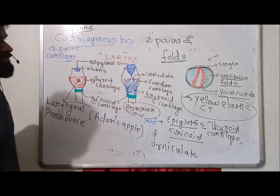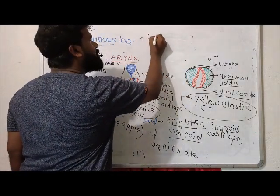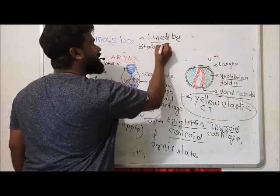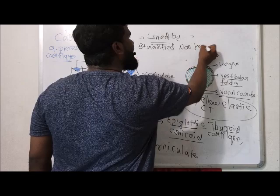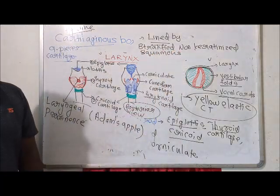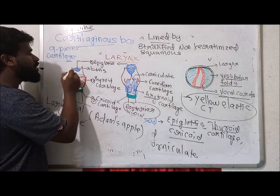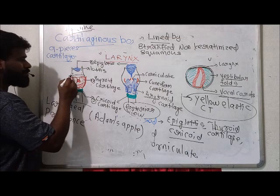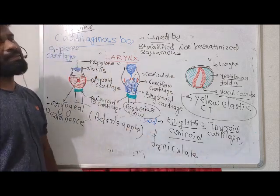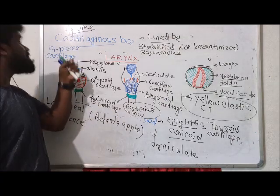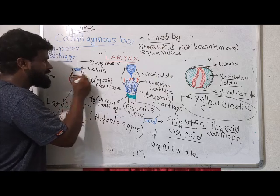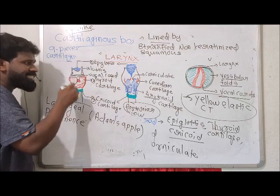The larynx is lined by different types of epithelium depending on the region. The region above the vocal cords is lined by stratified non-keratinized squamous epithelium. The part below the vocal cords is lined by ciliated pseudostratified epithelium.